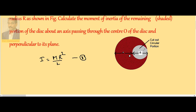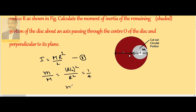Now, let small m be the mass of the circular portion removed. What is the value of this mass? We know that for a 2-dimensional object, mass is directly proportional to area. So small m divided by capital M equals (R/2)² divided by R², which is 1/4. Therefore, small m equals M/4.